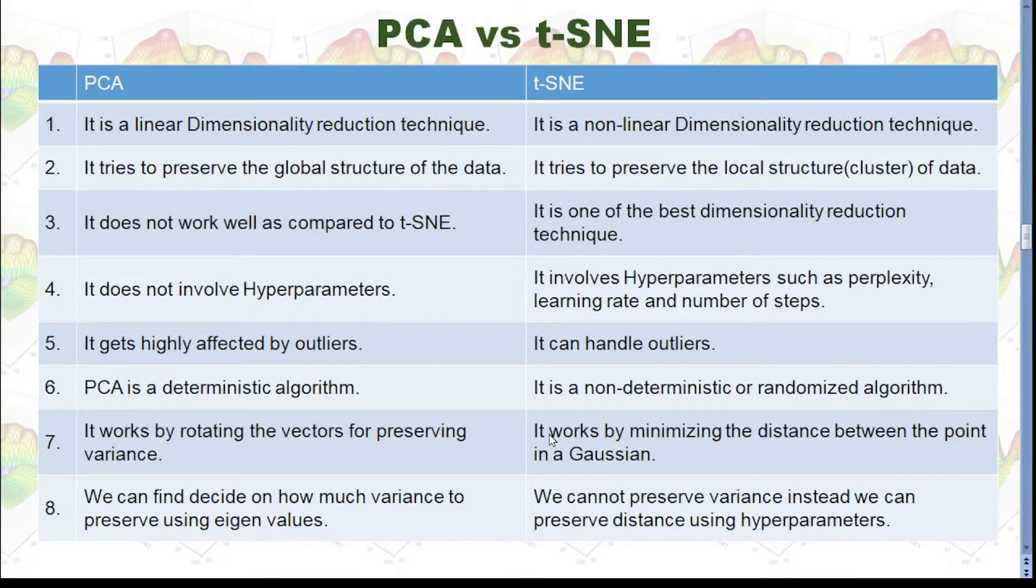Now let's compare PCA and t-SNE. Like I just mentioned, PCA is a linear dimensionality reduction technique and t-SNE is nonlinear technique. Then PCA tries to preserve the global structure of the data. PCA does not work well as compared to t-SNE. And t-SNE is one of the best dimensionality reduction techniques.